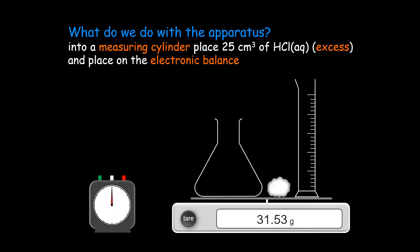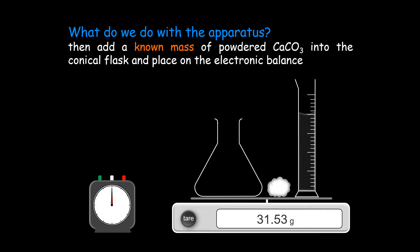Into a measuring cylinder, place 25 cm³ of hydrochloric acid in excess and place on the electronic balance. Then add a known mass of powdered calcium carbonate into the conical flask and place on the electronic balance.